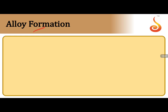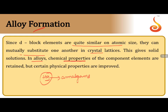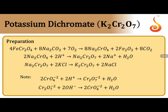Alloy formation: transition elements have quite similar atomic sizes, so they mutually substitute one another in crystal lattices to form solid solutions. If one metal is mercury, those alloys are called amalgams. In alloys, chemical properties are retained while physical properties are improved — a very important distinction.